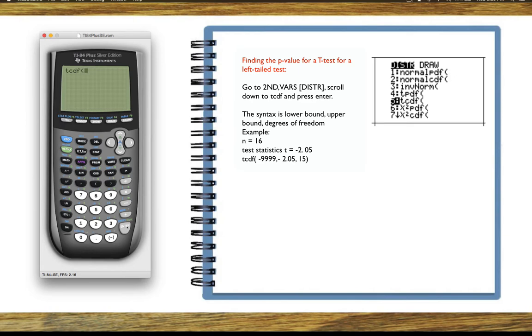We're going to look at a left tail test when the alternative hypothesis, for example, is that some mean is less than some number. The test statistic will be negative 2.05 with a sample size of 15.